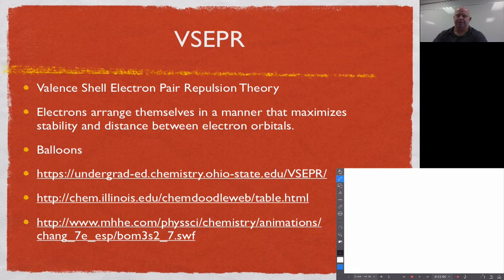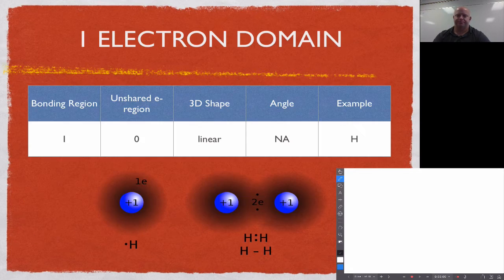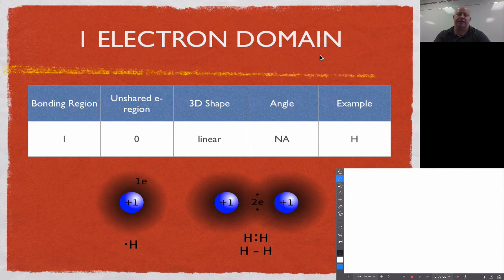In this video we're going to talk about VSEPR and take you step by step through the different possibilities of the VSEPR model. It's assumed that you've watched the introduction video already. When we do VSEPR, we basically have different electron domains — regions where we're going to find electrons. There are going to be up to six different domains, which can be areas where electrons are bonded together or areas that are unshared.